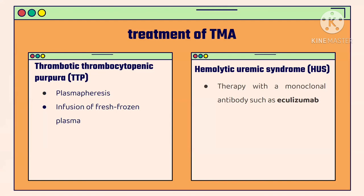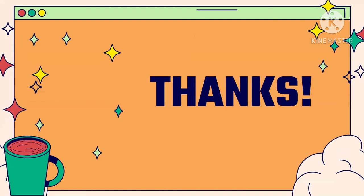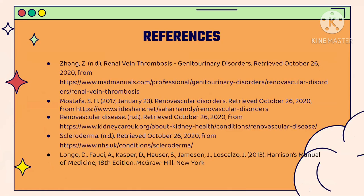Aside from the diseases mentioned, other diseases related to renal vascular disease include vasculitis, sickle cell nephropathy, and arteriolar nephrosclerosis. Thank you for listening to this report.